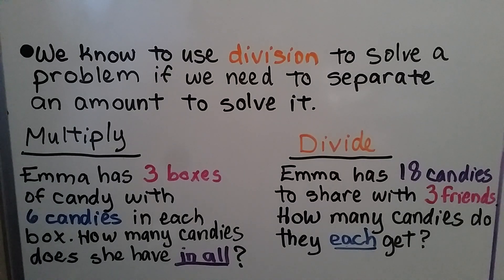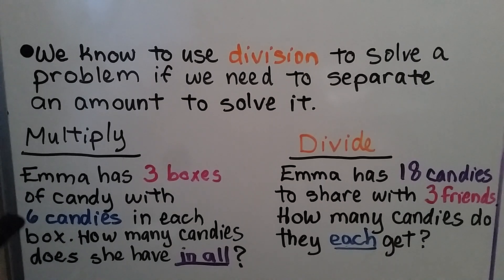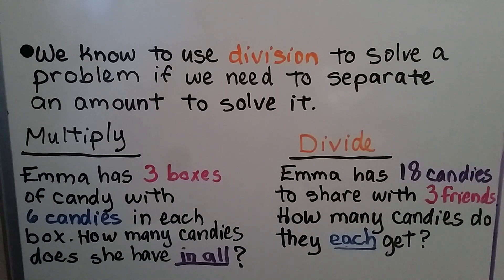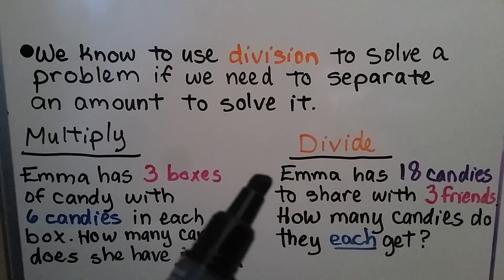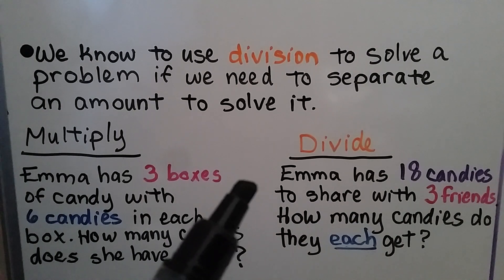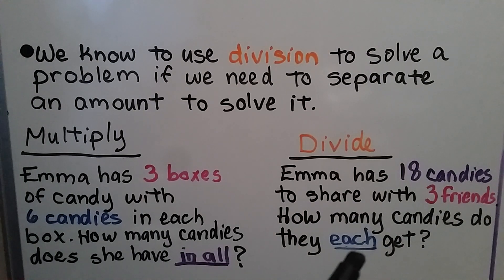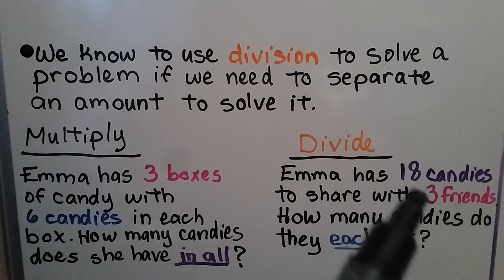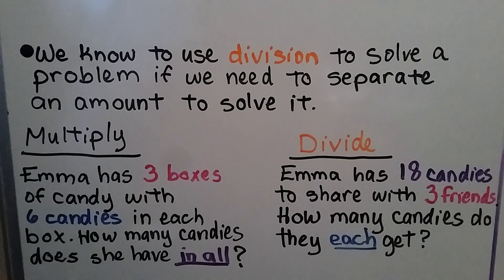We know to use division to solve a problem if we need to separate an amount to solve it. To multiply, we have problems like: Emma has three boxes of candy with six candies in each box — how many does she have in all? We need to find a total amount, which tells us to multiply three times six. For a division word problem, Emma has 18 candies to share with three friends — how many do they each get? This asks us to separate 18 candies among three friends, so we use division to solve it.